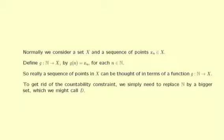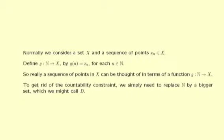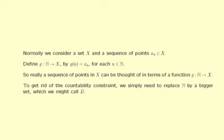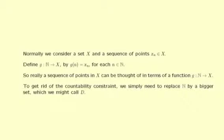To get rid of the countability constraint, we simply need to replace ℕ by a bigger set, which we might call D. What sort of restrictions do we want on the set D? Clearly, we need to be able to define not only sequences but convergent sequences. We saw that to define convergent sequences we needed to have an integer M such that for all N greater than or equal to M something was true. So on the set D we need to have some notion of 'bigger' — some kind of ordering. This leads us to the notion of a directed set.